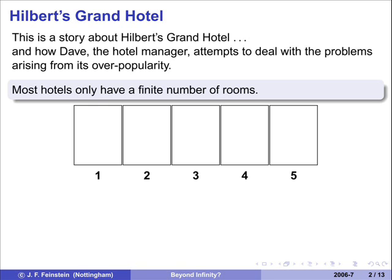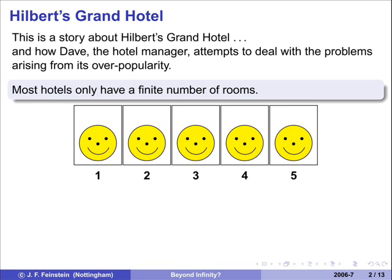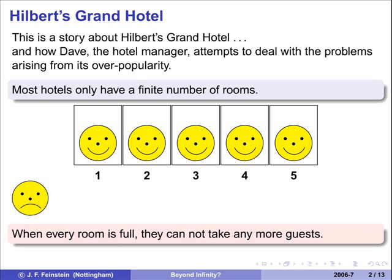So most hotels have only got a few rooms in. Here's one with five. It's beginning to fill up. Now it's full, and the next person's a bit unlucky, so can't get in. That's the story of a finite hotel. Whenever room's full, you can't take anybody else in.